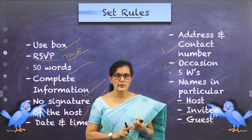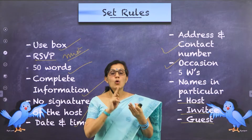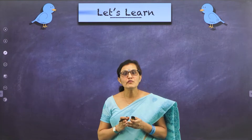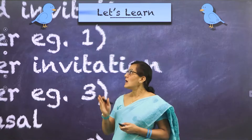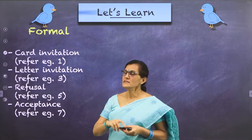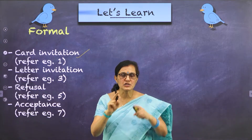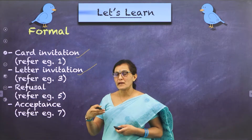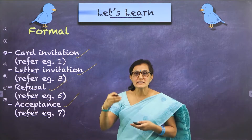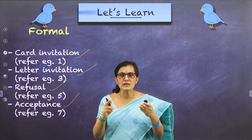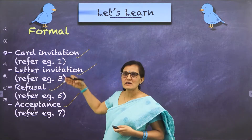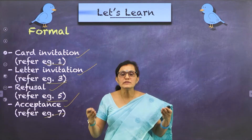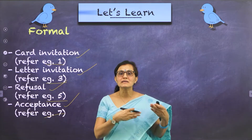Now I have shown you how an invitation looks, the kinds of invitation, what is an invitation, and the set rules. Under the formal type of invitation, you need to know 4 kinds: how to write a formal invitation as a card, how to write it as a letter, and how to write a formal acceptance or refusal reply. I have demonstrated live examples under these headings — Examples 1, 3, 5, and 7 in my slides.